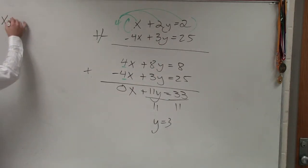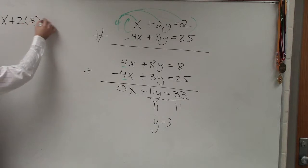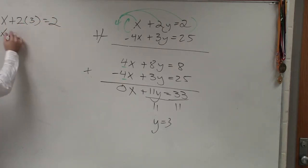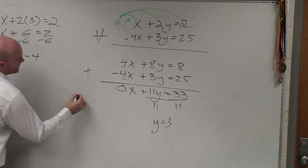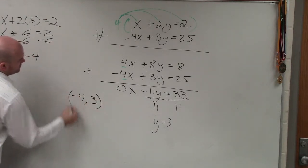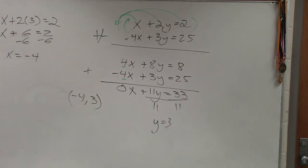So I would write x plus 2 times 3 equals 2. x plus 2 times 3 is 6, equals 2, subtract 6, subtract 6, x equals negative 4. So that would be my solution. That's pretty much it.